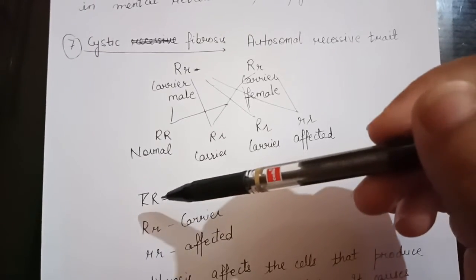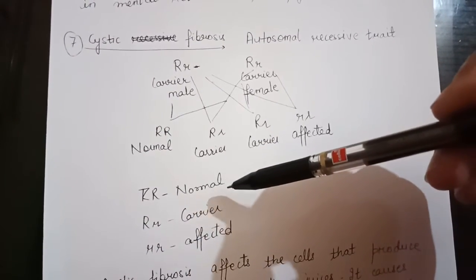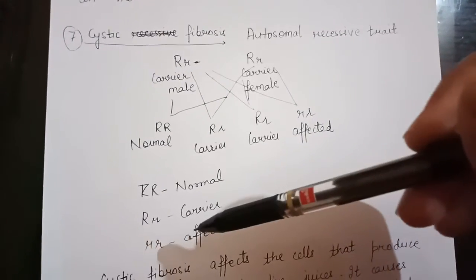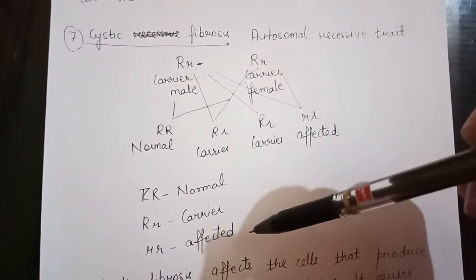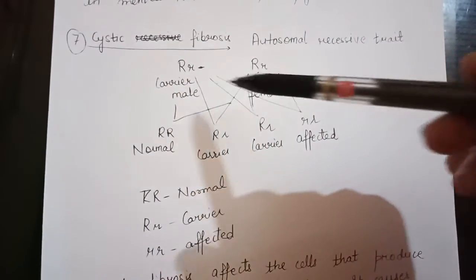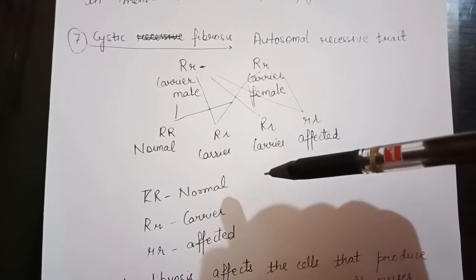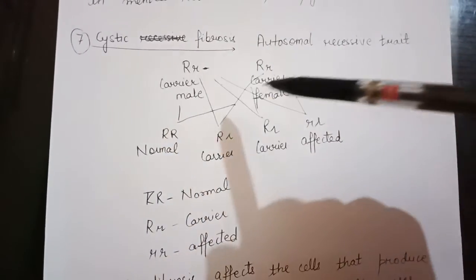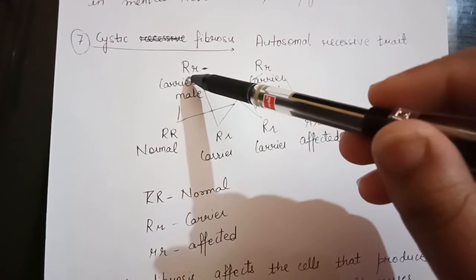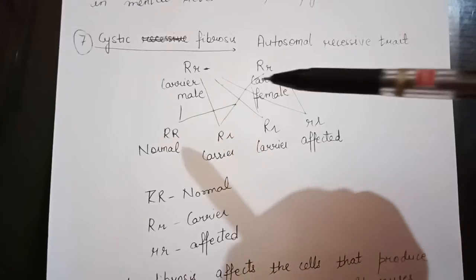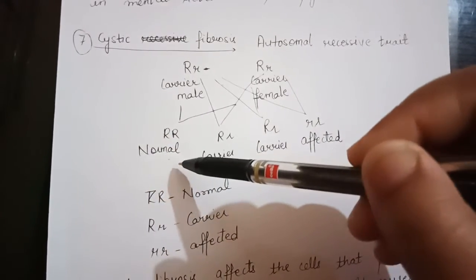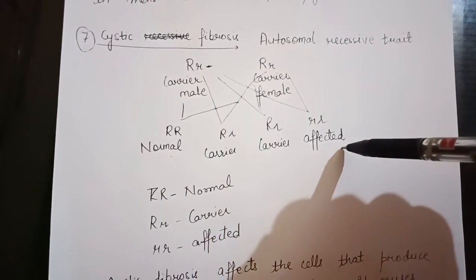In this cross, capital R capital R represents normal, capital R small r represents carrier, and small r small r represents affected. If both parents are carriers — capital R small r × capital R small r — then the progeny can be normal, carrier, carrier, and affected.